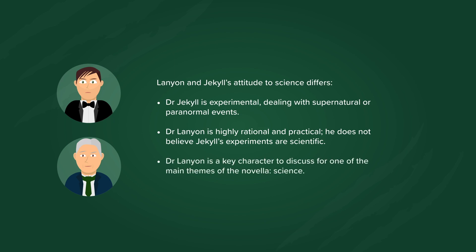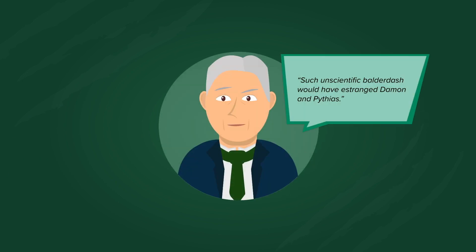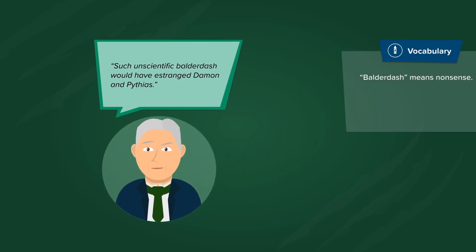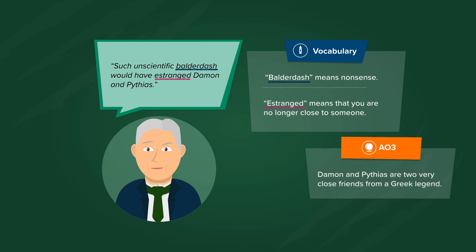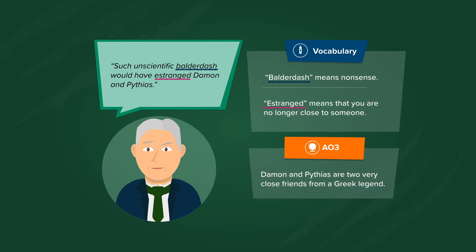Dr Lanyon is a key character to discuss for one of the main themes of the novella: science. Dr Lanyon says 'such unscientific balderdash would have estranged Damon and Pythias.' Balderdash means nonsense, and to be estranged means that you are no longer close to someone. Damon and Pythias are two very close friends from a Greek legend.